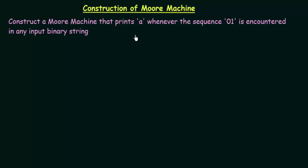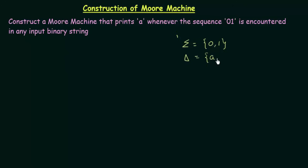What is the main difference between a Mealy machine and a Moore machine? In a Moore machine, the output is associated to the states, whereas in a Mealy machine the outputs were associated with the inputs. For this example, our input sigma could be 0s and 1s, and our output delta will be A's or B's.